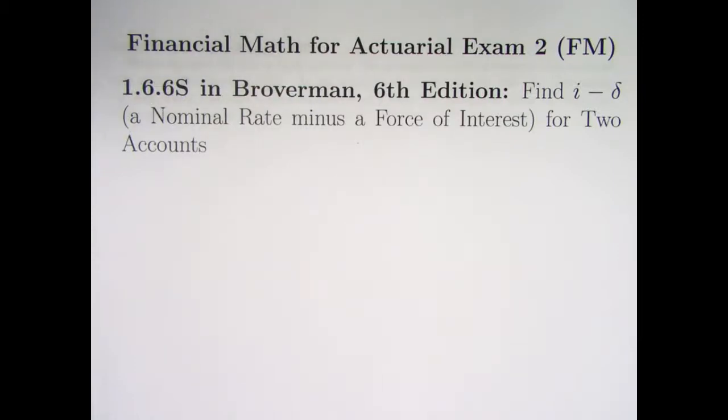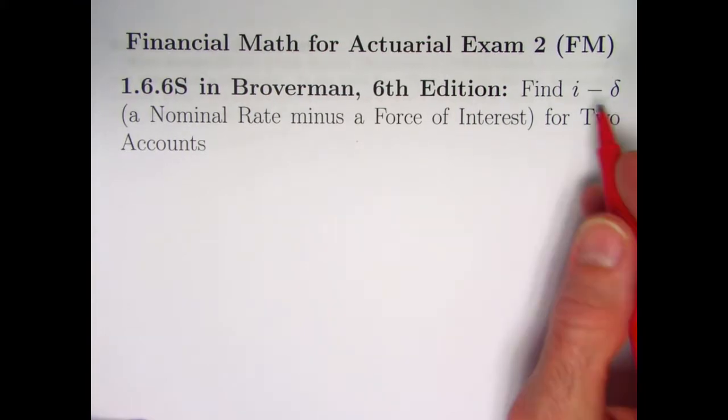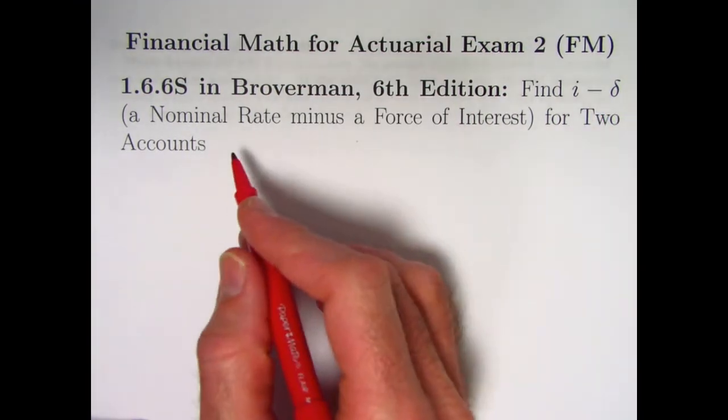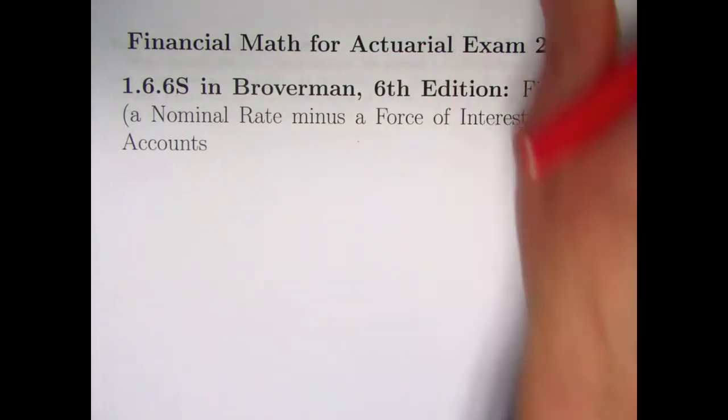Hello, in this video we're going to take a look at problem 1.6.6s in Broberman. We'll be finding I minus delta, which will end up being a nominal rate minus a force of interest for two accounts.